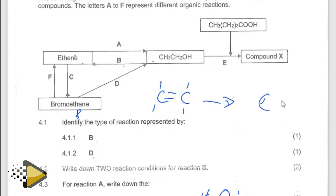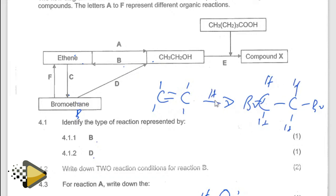Meaning that I'm going to have a bromine there and a bromine there, and then hydrogen, hydrogen, hydrogen. I said bromo, not dibromo. So what I'm going to use — I'm going to put hydrogen here, and then hydrogen bromide. If it was dibromo, then it would have been bromine only. So basically you put hydrogen, hydrogen, hydrogen, hydrogen — that's what they are talking about.